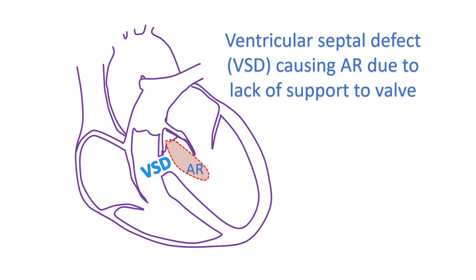Other birth defects like a ventricular septal defect, a hole in the wall between the lower chambers of the heart, can also be associated with aortic regurgitation. This occurs because the support to the aortic valve leaflets from below is lost due to the defect just below it.